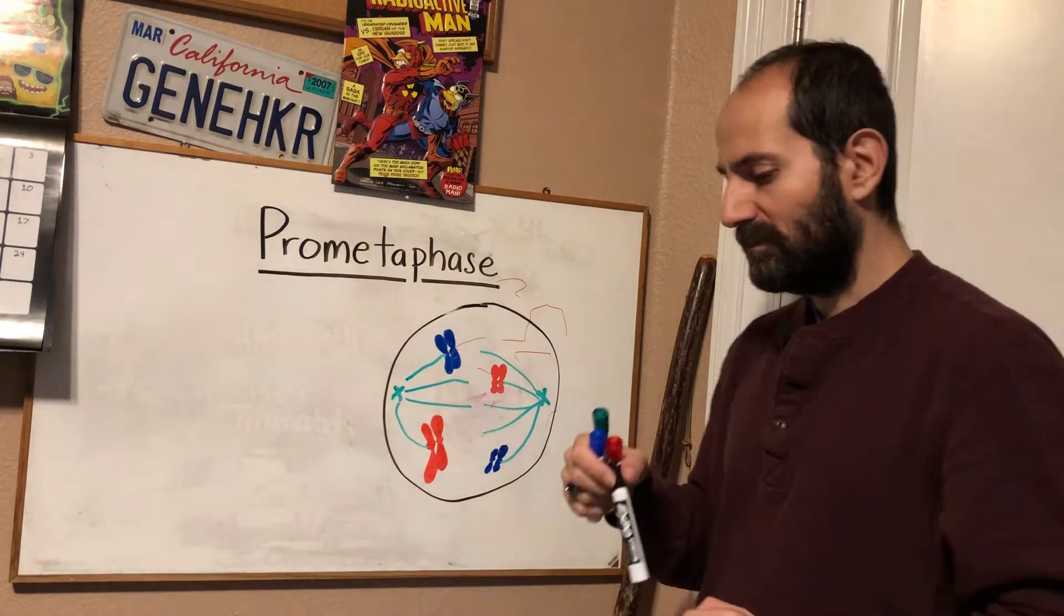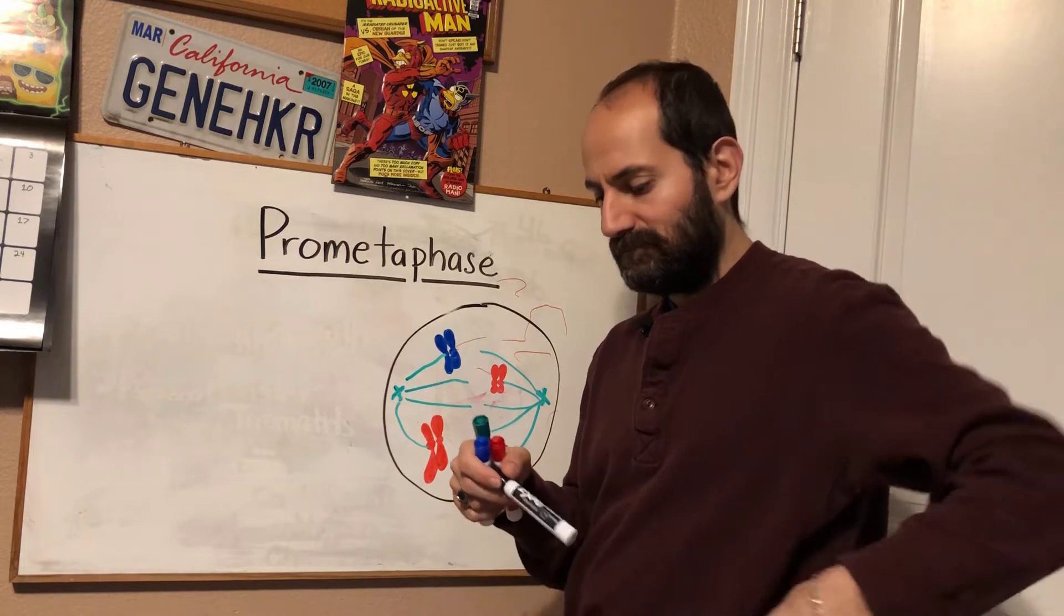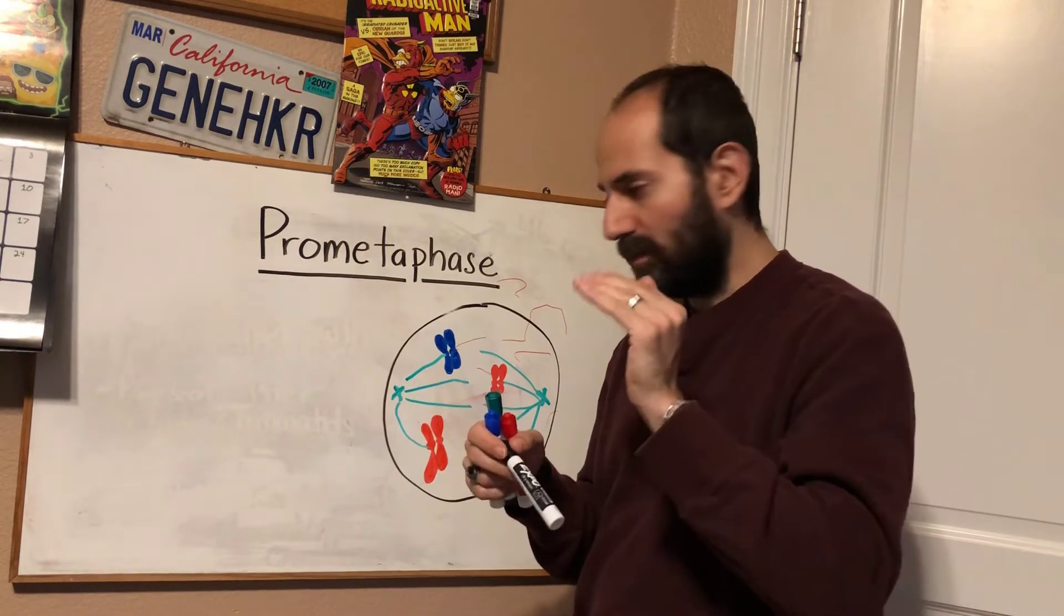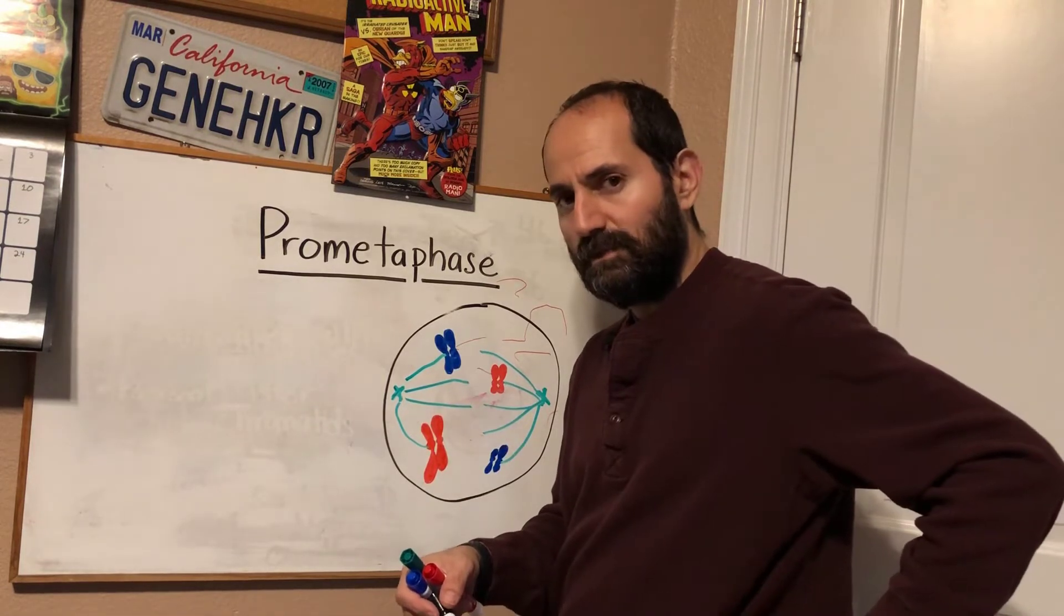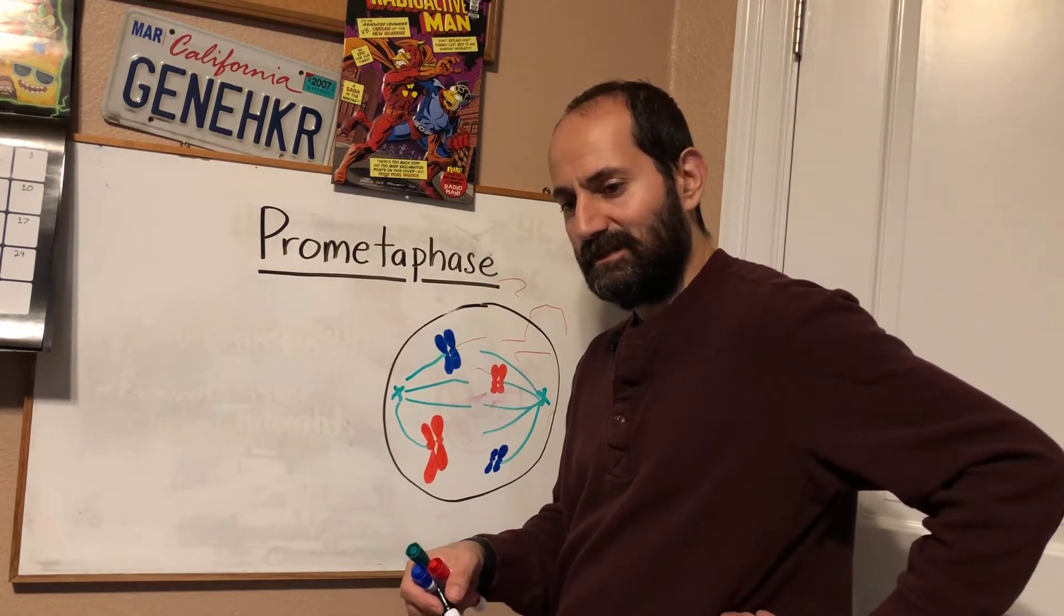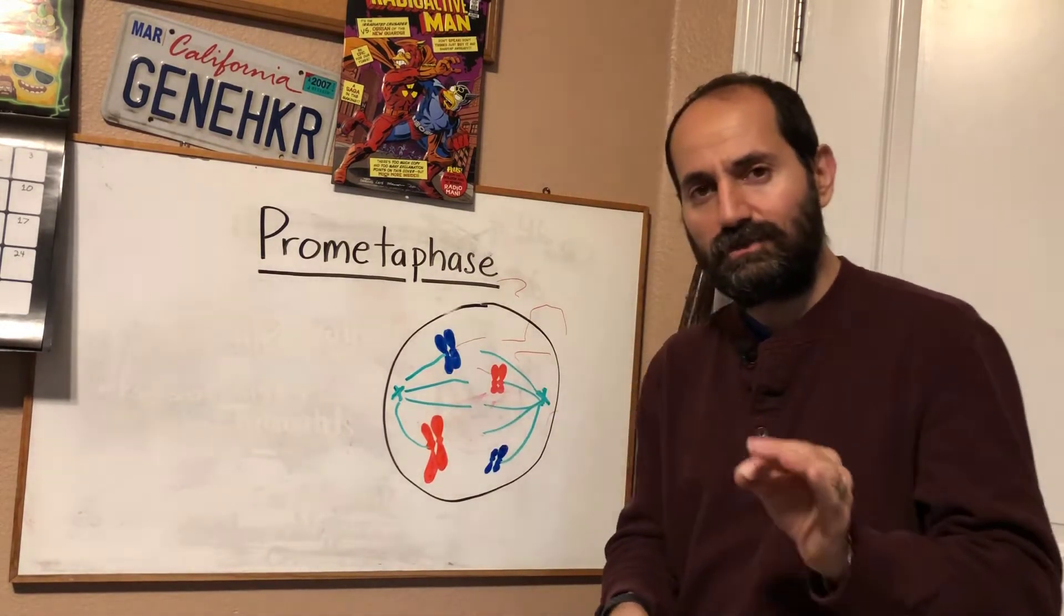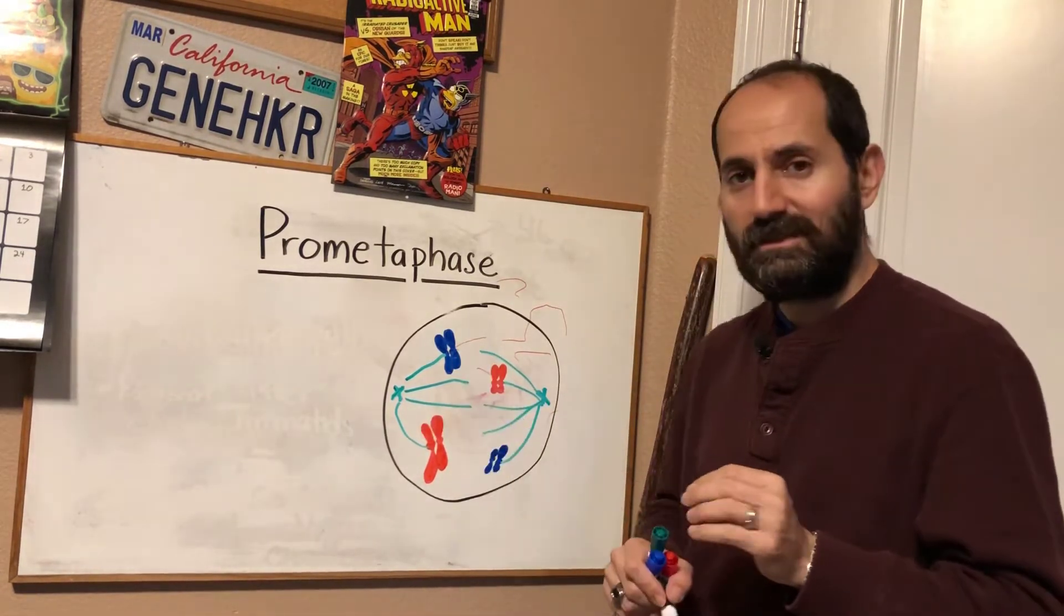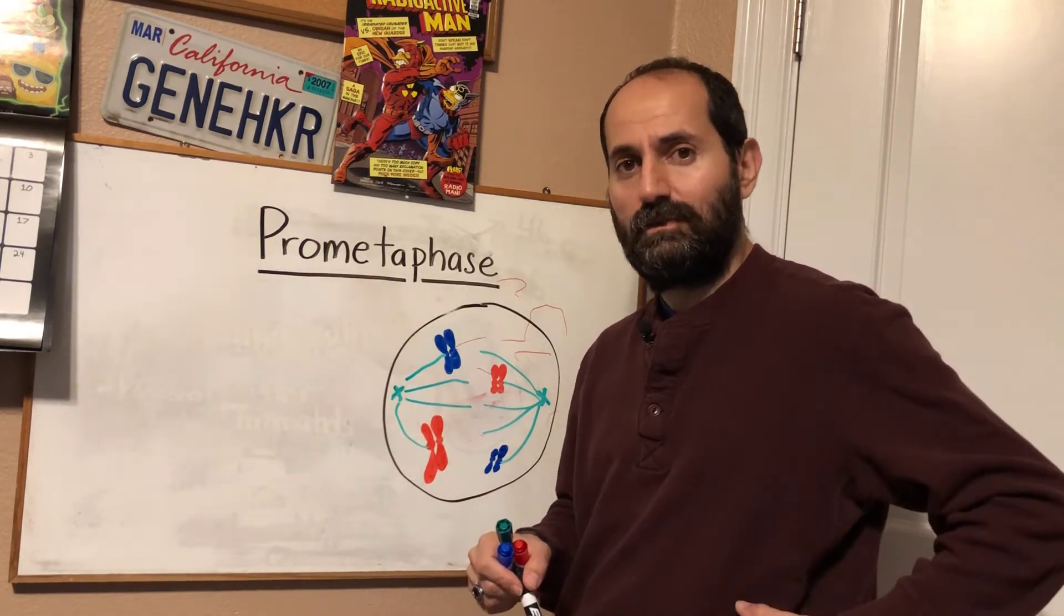Remember, sister chromatid pairs have these kinetochore proteins on the outside. And kinetochore proteins allow for docking of microtubules. Microtubules can dock onto the kinetochore protein. So these microtubules are actually attaching to the sister chromatid pairs at the narrow waist, at the centromere, at those proteins called the kinetochore.